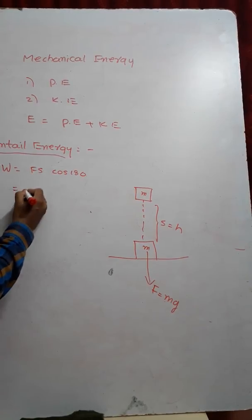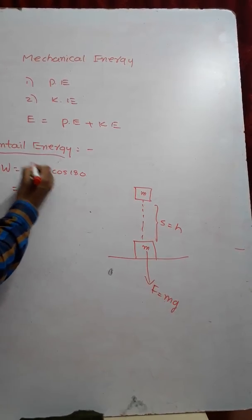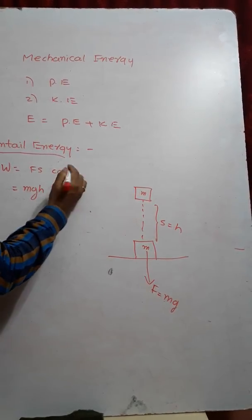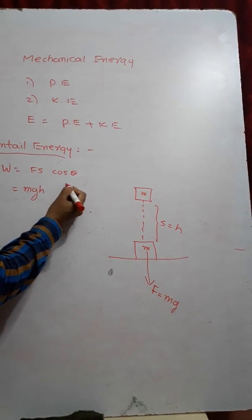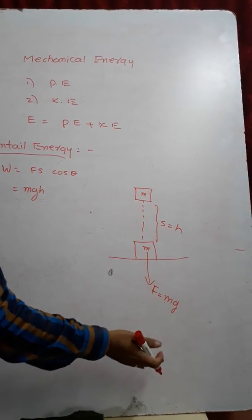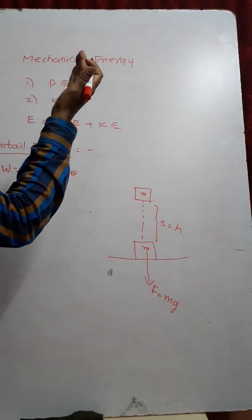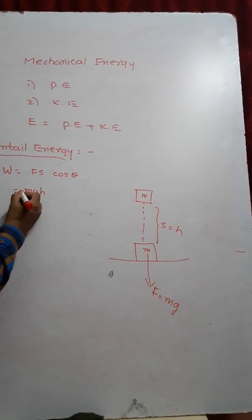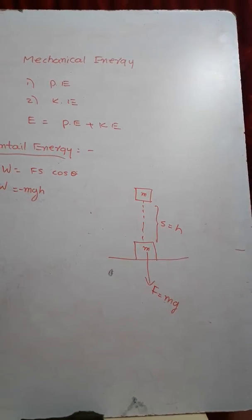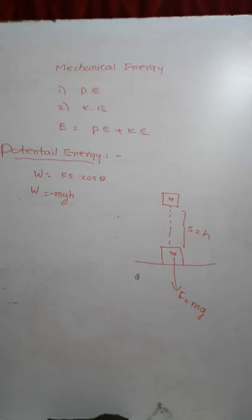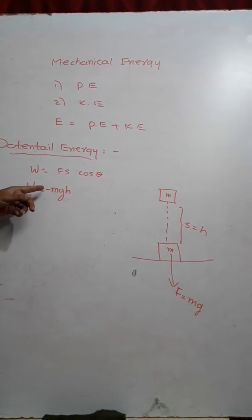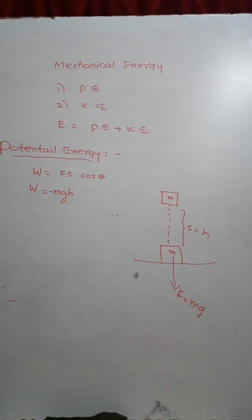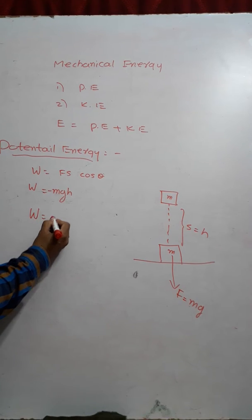Instead of F, I substitute mg; instead of S, I substitute h. Here, θ is 180 degrees, because force is acting vertically downwards and displacement is vertically upwards. So the angle is 180 degrees. Cos 180 is minus 1. Work done is negative. Numerically, W is equal to mgh.